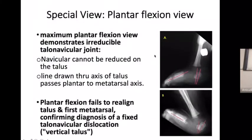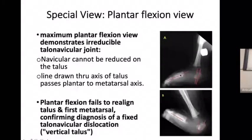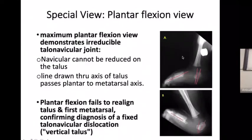There is a special view to diagnose vertical talus and differentiate it from oblique talus deformity. Maximum plantar flexion view demonstrates the irreducibility of the talonavicular joint — the navicular cannot be reduced onto the talus in congenital vertical talus. In the plantar flexion view the axis of the talus passes plantarward to the first metatarsal axis. Both the talus and calcaneal axes are lower but do not match. When plantar flexion is performed, the deformity will not reduce, confirming the rigid type.